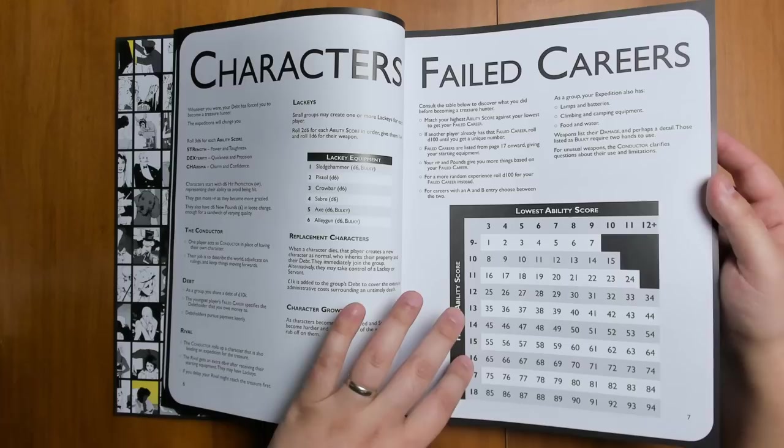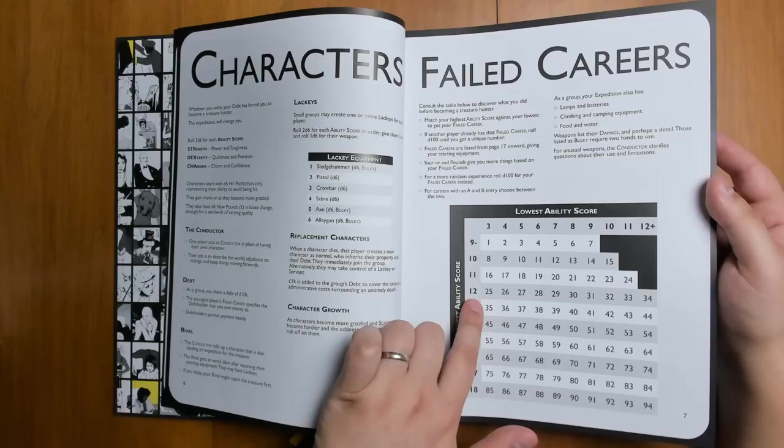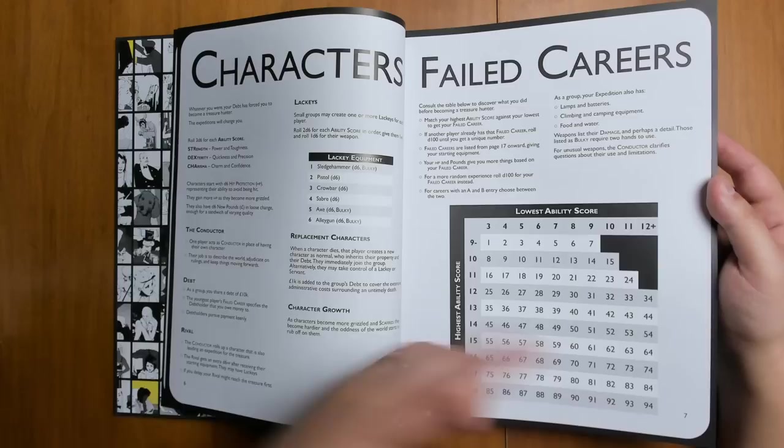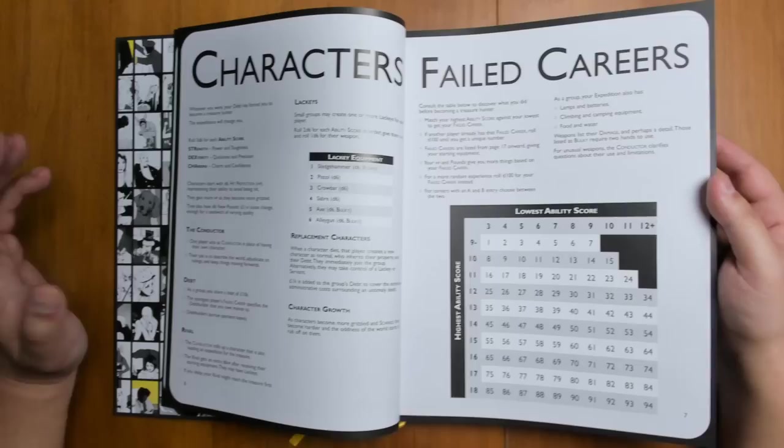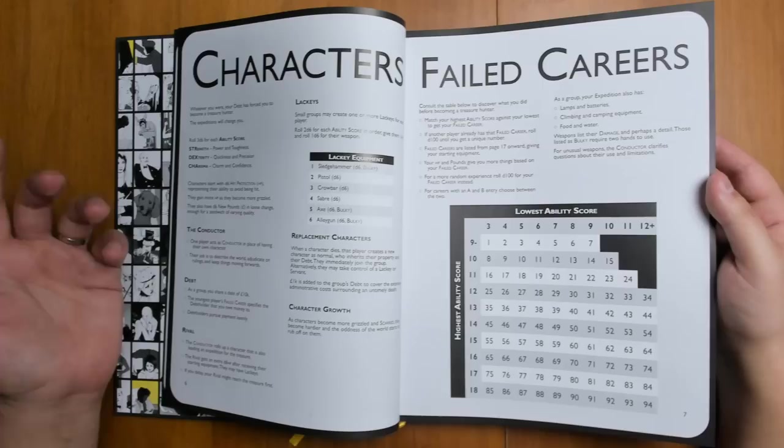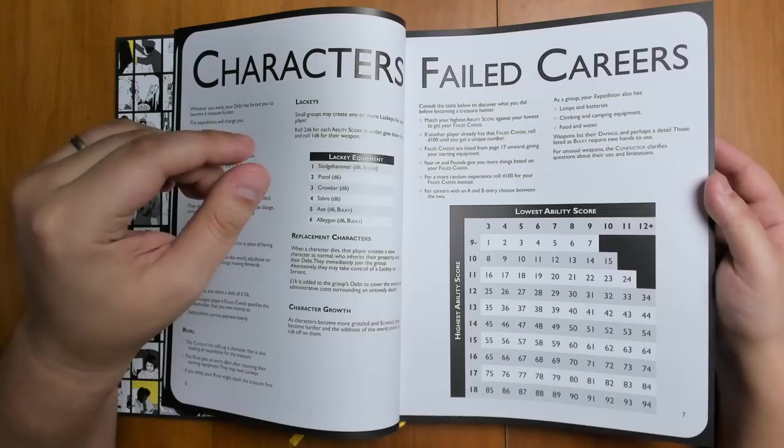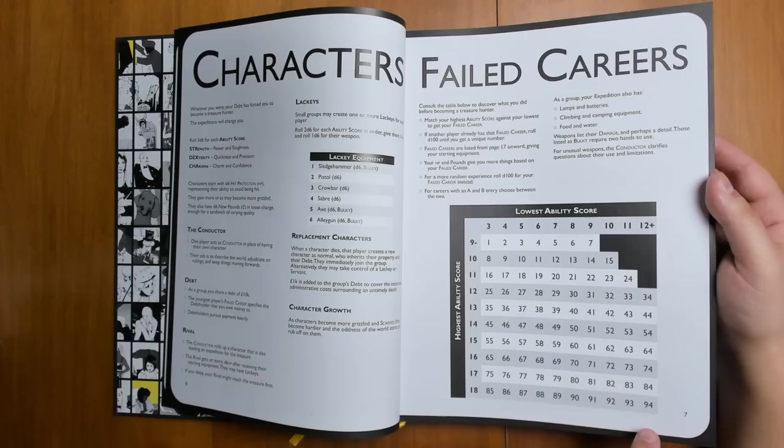Basically, what you're doing here is you're comparing your highest ability score versus your lowest ability score. So let's say that your strength is 12 and that's the highest thing you got. You would look in this row. And if your lowest ability score was maybe your dexterity, which was a 9, then you would go to failed career number 31. There is 100 failed careers available in this book. Although if you notice, it actually only goes up to 94 on this chart. If you create a character and then someone rolls the same failed career as you in your party, rather than having two people of the same failed career, you roll a D100 to choose what your career is. So that gives you a small chance of getting the special secret careers above 94.